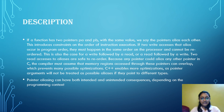If a function has two pointers PA and PB with the same value, we say the pointers alias each other. This introduces constraints on the order of instruction execution. If two write accesses that alias occur in program order, they must happen in the same order on the processor and cannot be reordered.